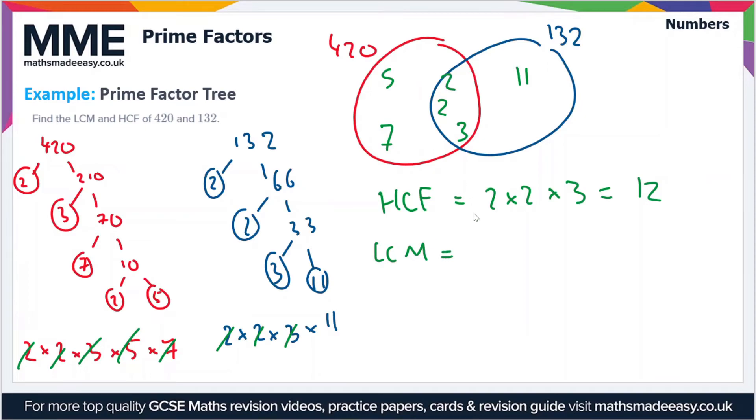Now the lowest common multiple is a bit harder to find. That's all of the numbers in the Venn diagram multiplied together: 2 × 2 × 3 × 5 × 7 × 11. If you were doing this manually with pen and paper, you'd have to do this with the long multiplication method.